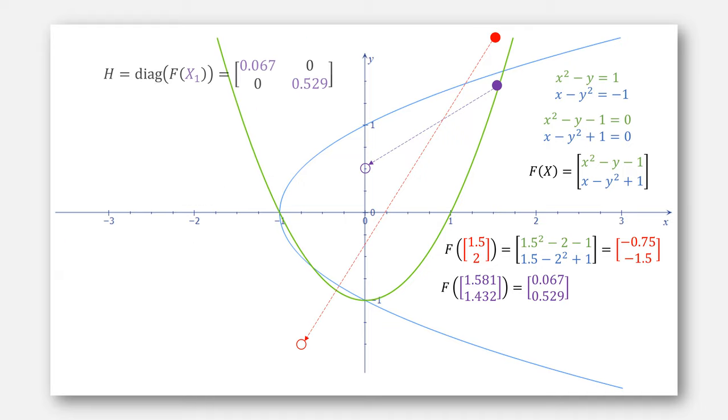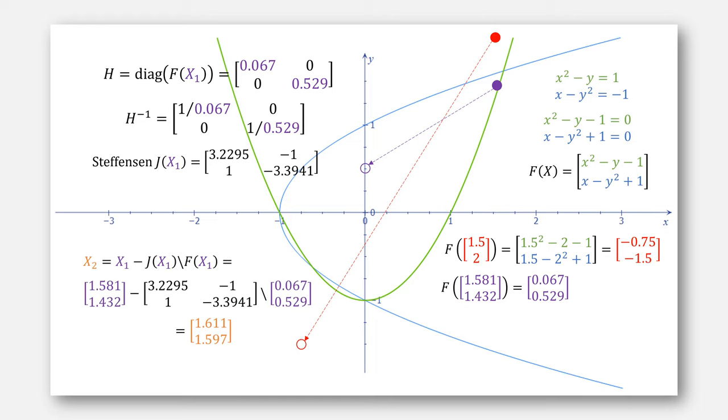We then use our new value for X to compute H and H inverse, which we then plug everything into our equation for J. I've saved you the steps to give this approximation of the Jacobian. Afterwards, we use Newton's method with our approximated J to give our next value for X, which looks like this. Very close.